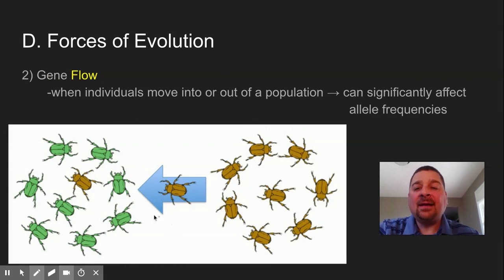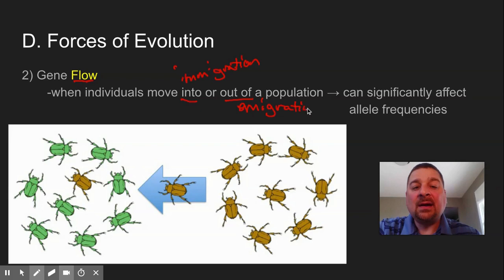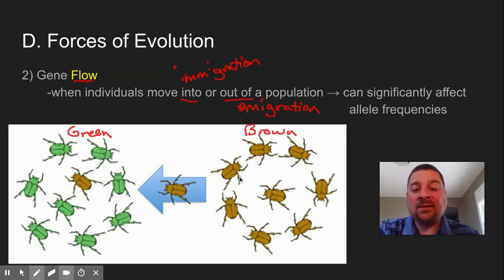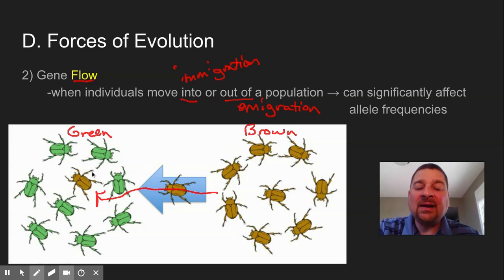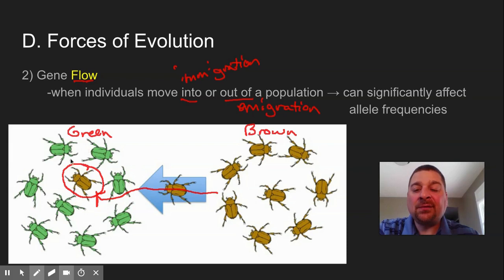The second thing is gene flow — when things move into a population, which would be immigration, or out of a population, which would be emigration. This can affect allele frequencies. For example, if you have a population of green beetles over here and a population of tan or brown beetles over there, and one of the brown beetles leaves and enters the green population, you're going to change the allele frequencies. If color is controlled by one gene, you're going to introduce new alleles to that population and change the frequencies of the green and other alleles present.